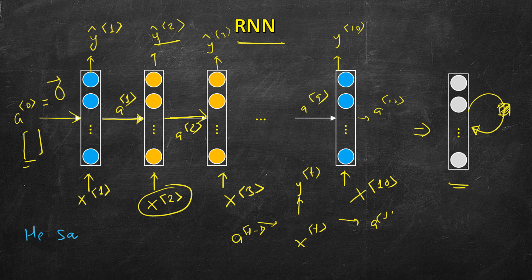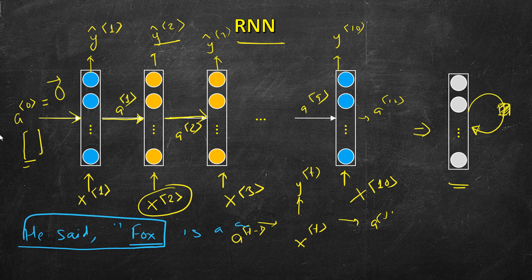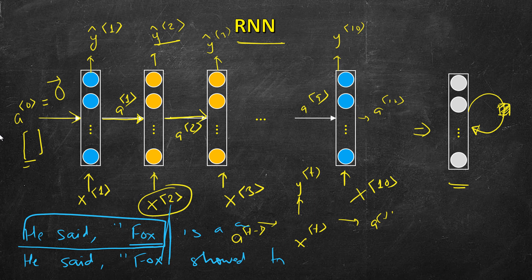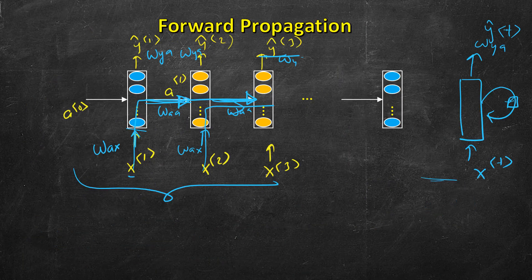For example, consider the sentence 'He said fox is a cunning animal.' Once we have processed the first three words, we cannot be sure whether 'fox' is the name of a person or not. The exact same first three words appear in 'He said fox showed me how to override the nuclear reactor,' where fox is the name of a person — Lucius Fox. So we need information not just from previous words but also from words further in the sentence. For that purpose, we will later see bidirectional RNN, but for now a simple RNN suffices.